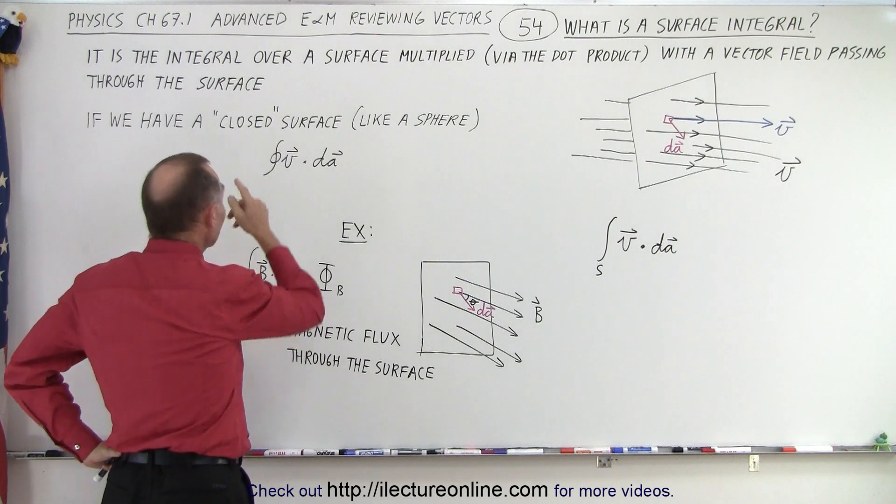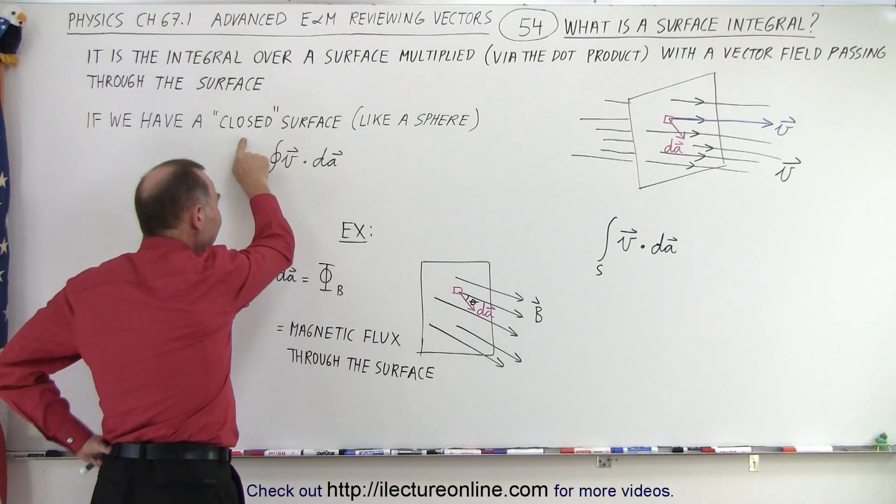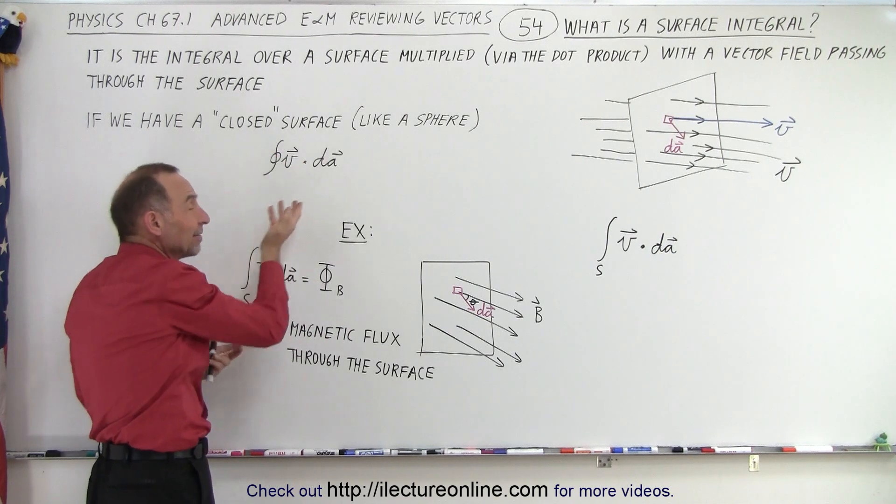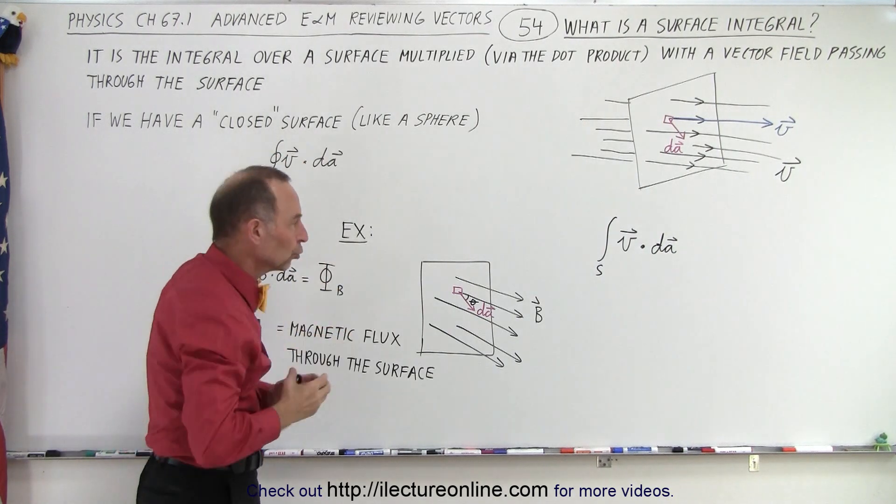Now, if you have a closed surface, like a sphere, then we write it like this. We put a little circle in there, that means that the entire surface is entirely closed.